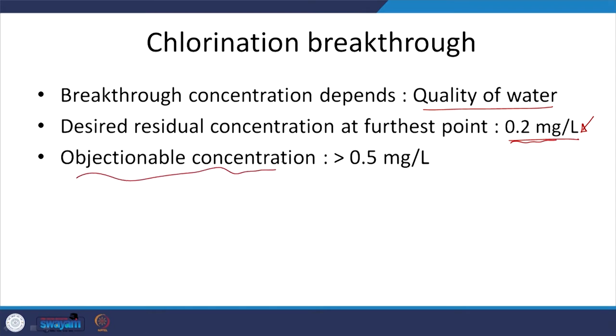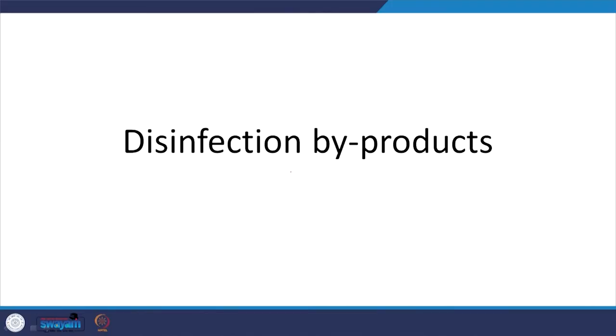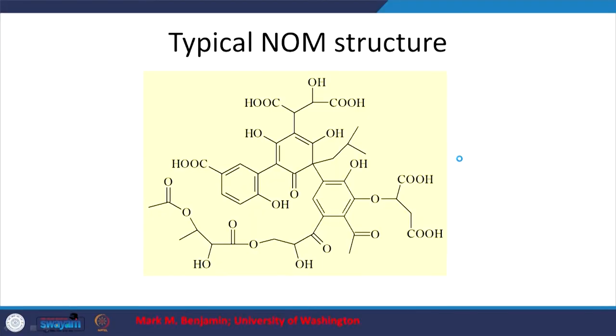Chlorine residual above 0.5 mg/L becomes objectionable. Regarding disinfection byproducts: too much of anything is bad. If you add too much disinfecting agent in the presence of organic matter, you form disinfection byproducts. Natural organic matter (NOM) — in India, organic matter may also be from human causes — reacts with free chlorine to form relevant organic-chlorine compounds. Typical NOM has complex aromatic structures, and with that you get the relevant DBPs.